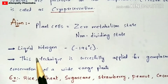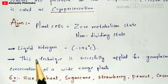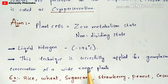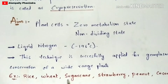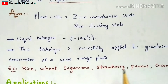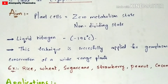This technique is successfully applied for germplasm conservation of a wide range of plants. For example, rice, wheat, sugarcane, strawberry, peanut, and coconut. Now let us see the procedure — the diagrammatic form of this cryopreservation technique — so that you can easily understand these definitions.